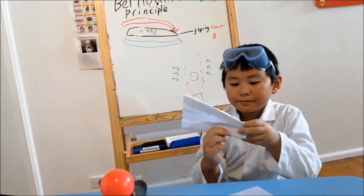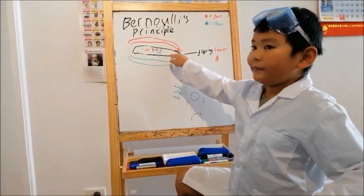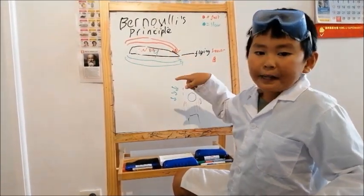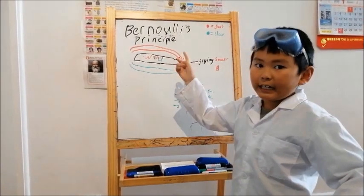I built this paper aeroplane. This is the wing of the aeroplane. The paper aeroplane I built. The fast air is on the top, trying to push it down, right?